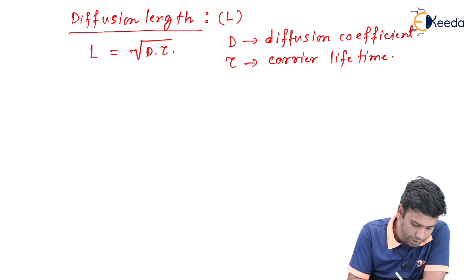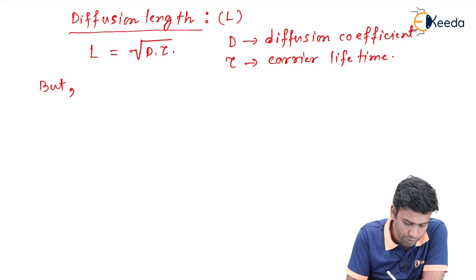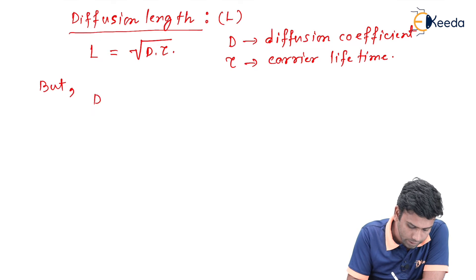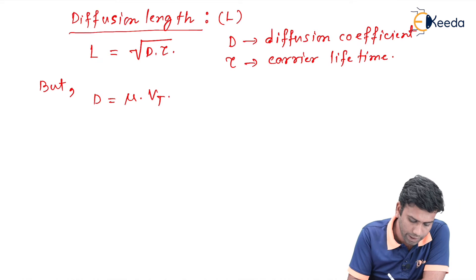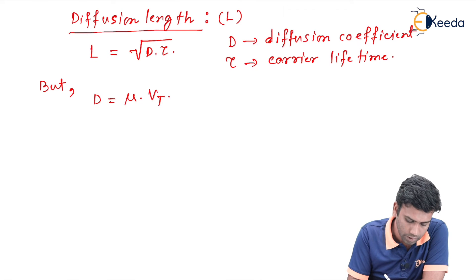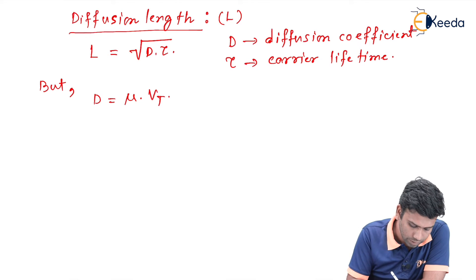Now, according to the Einstein formula, we know that D is nothing but μ·Vt, where μ is the mobility and Vt is the thermal voltage. So if I replace this D in the L equation, the L equation becomes √(μ·Vt·τ).